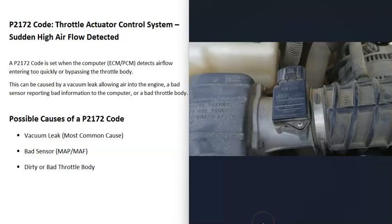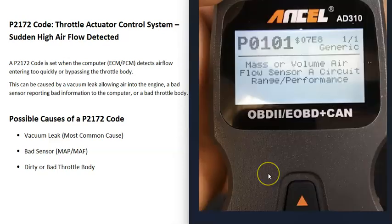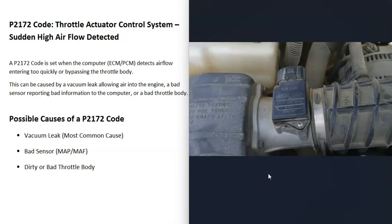The next possible cause is a bad sensor, such as a bad manifold absolute pressure sensor or a bad mass airflow sensor. Usually, if you have a bad sensor, you'll also get another code — for example, a bad mass airflow sensor might trigger a P0101 code. So if you are getting other codes alongside P2172, be sure to pay attention to those.